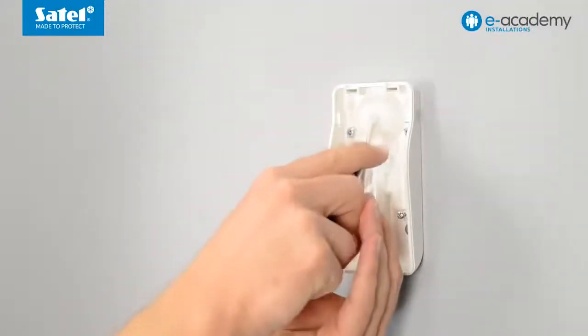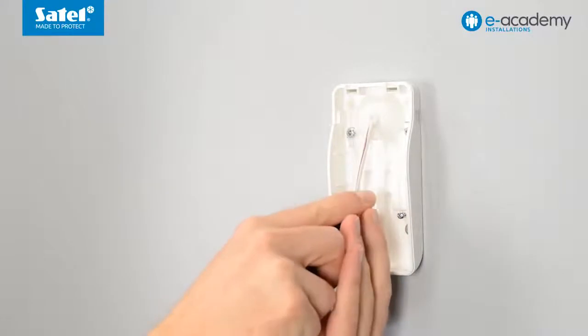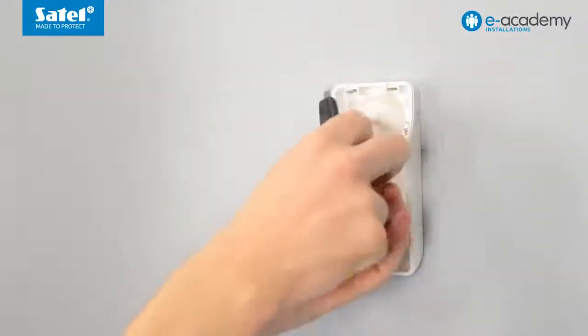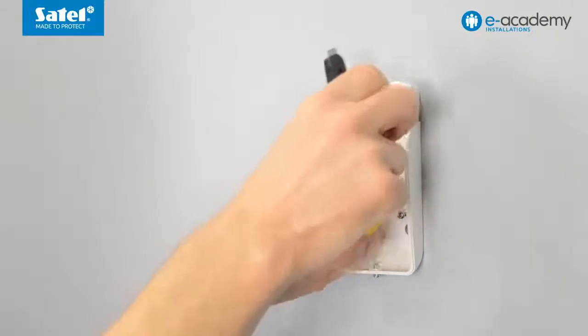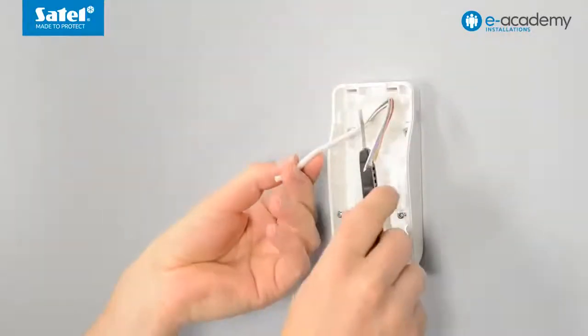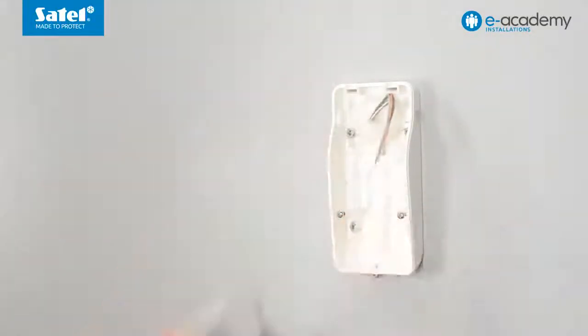Using a knife, cut the cable jacket lengthwise. Then take out the wires and bend them slightly. Cut off the unnecessary portion of the cable jacket.